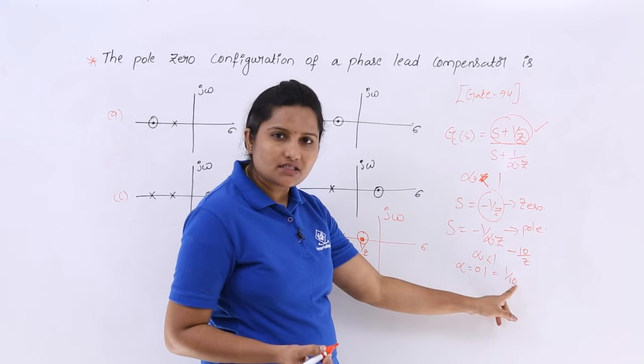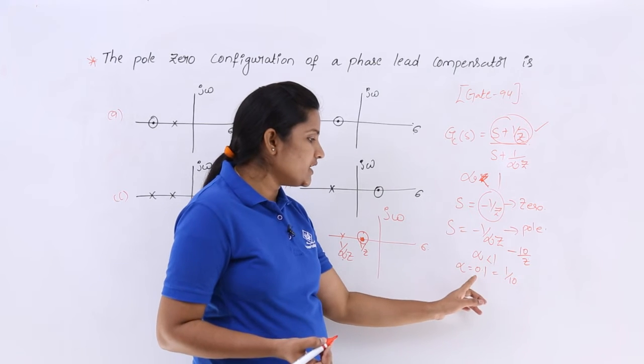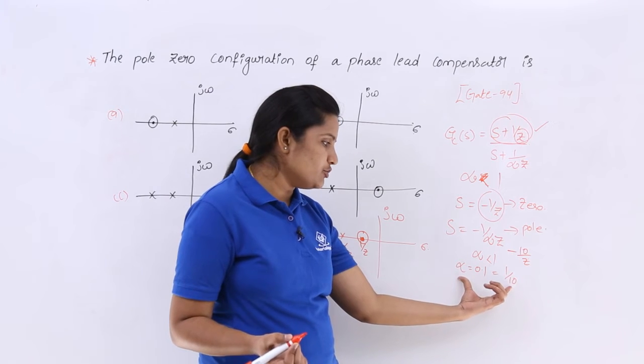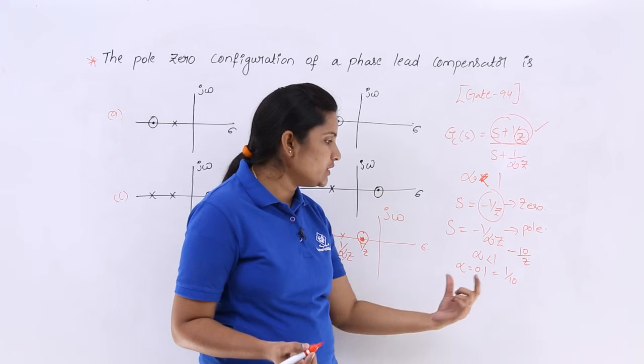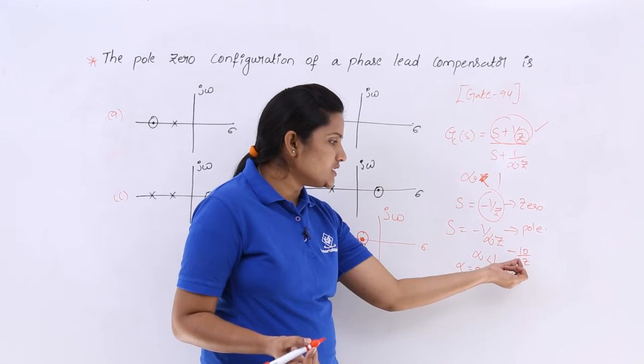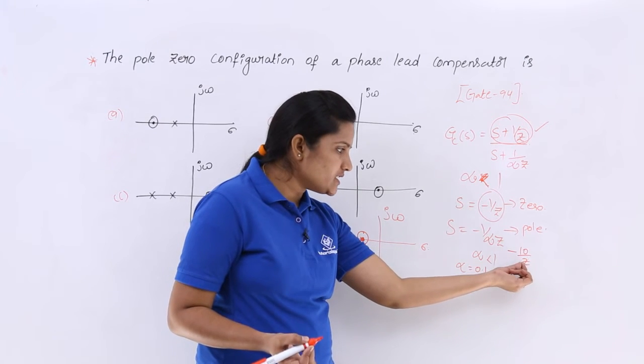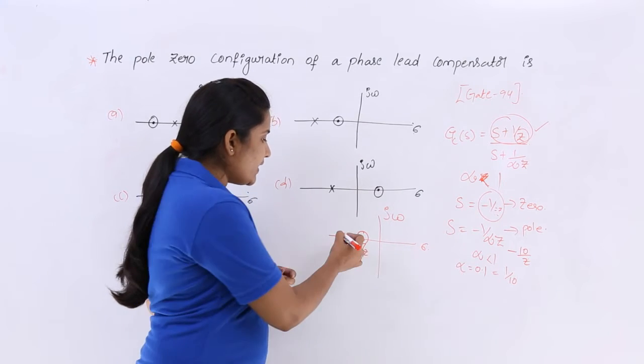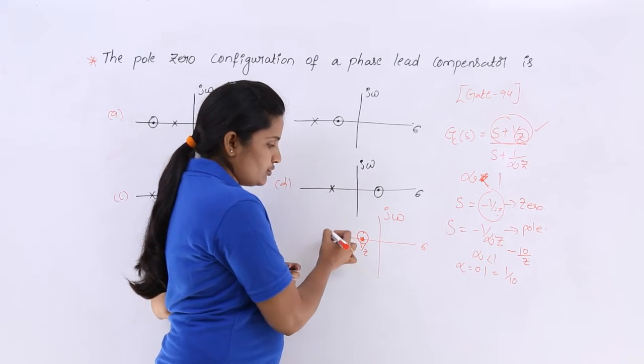We need to represent left to this zero. Now the reason is, you just substitute alpha is equivalent to less than 1 value. 0.1 is less than 1 only. If I substituted alpha is equivalent to 0.1, then that is equivalent to 1 by 10. If I substituted in this minus 10 by Z, minus 10 by Z will be left to 1 by Z. That is why I am representing my pole left to this zero.